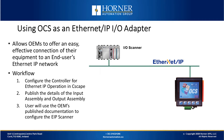Let's discuss the steps required to use an OCS as an Ethernet IP IO adapter. This allows an OEM to offer an easy, effective connection of their equipment to an end-user's Ethernet IP network. The first step is configuring the controller for Ethernet IP operation in Seascape. You'll document the details of input and output assembly and then publish that information. Then the user will take the OEM's published documentation and configure their Ethernet IP scanner.